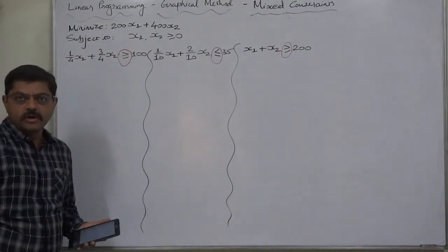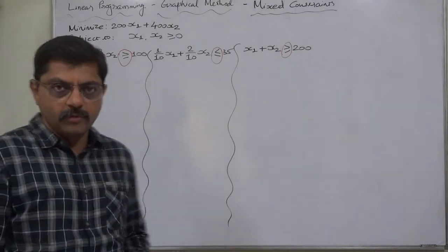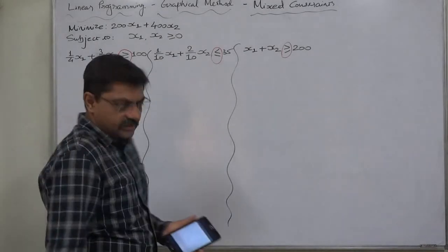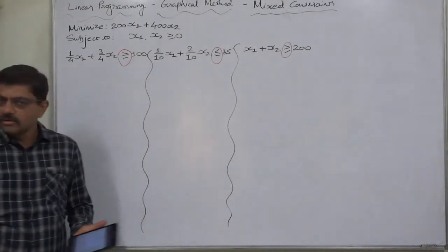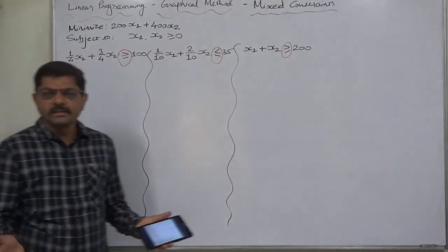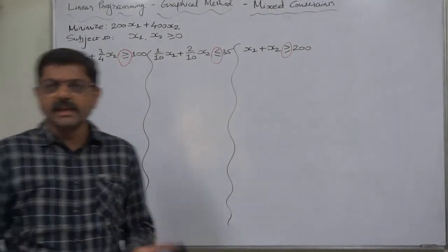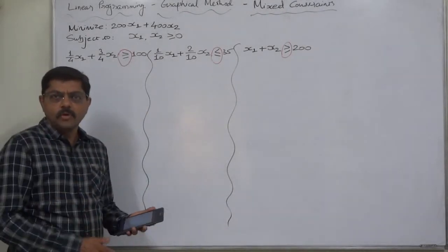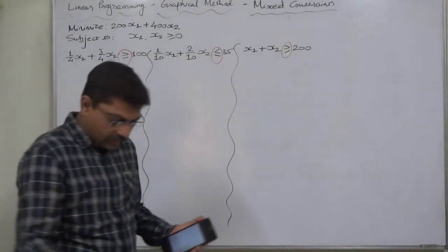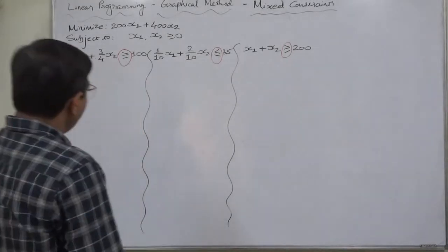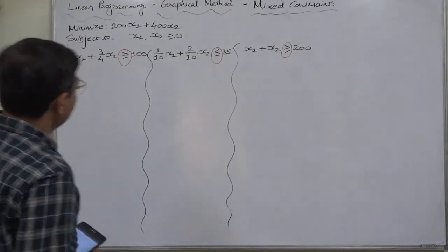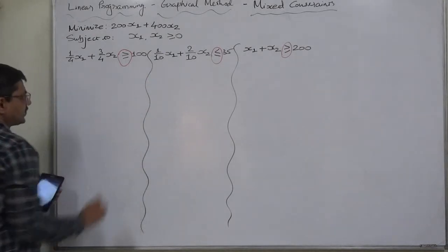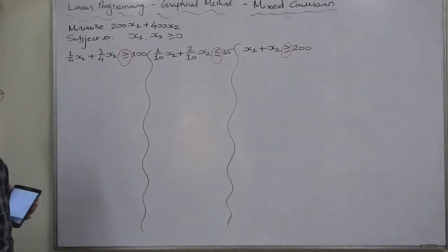This case has both kinds of constraints — less than or equal to and greater than or equal to — and is called a case with mixed constraints. This is more practical, because it is not at all necessary that in a single linear programming problem only one type of sign should be there.